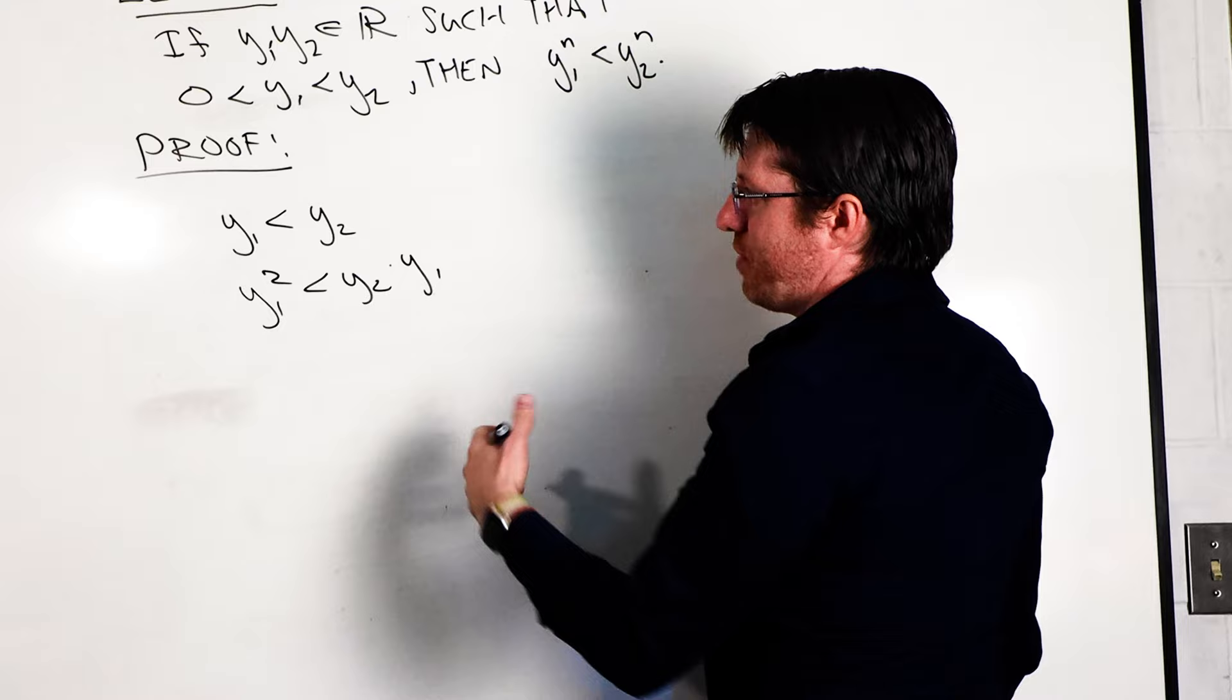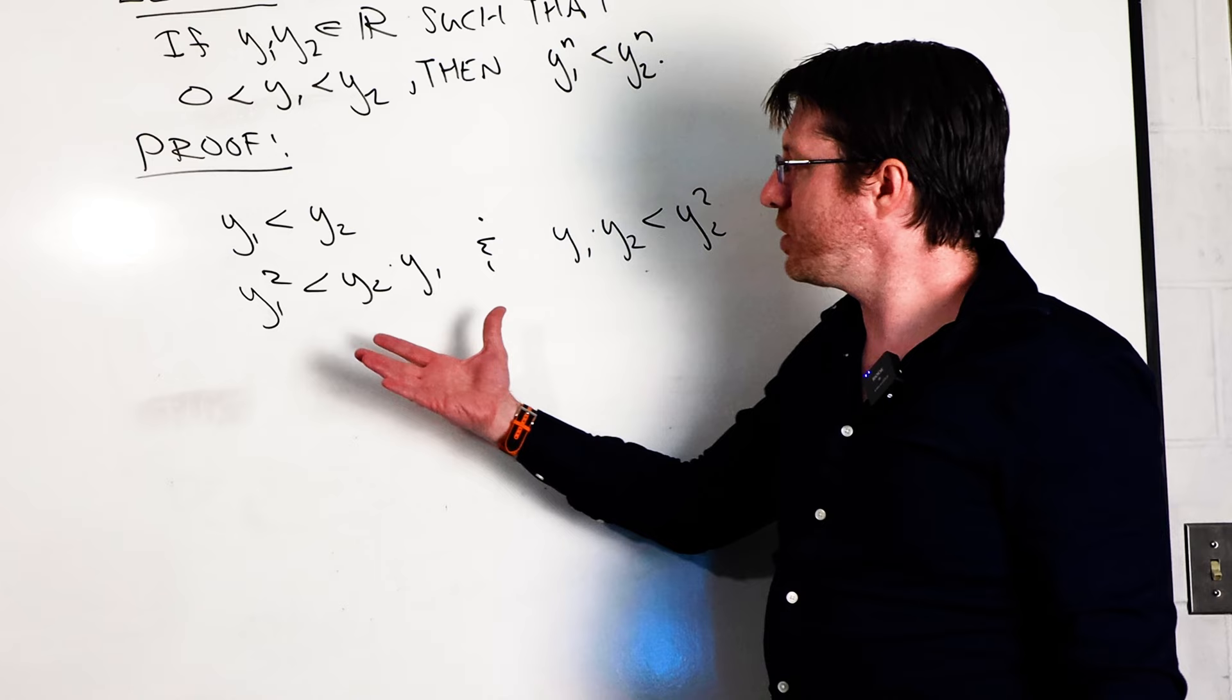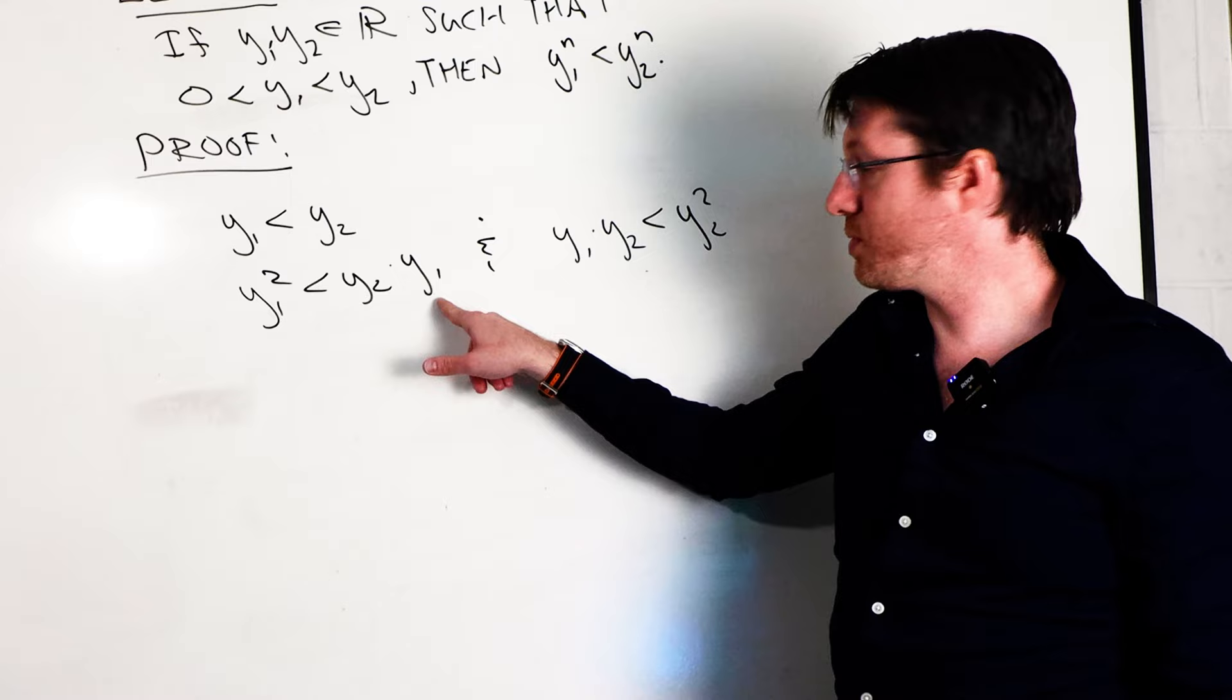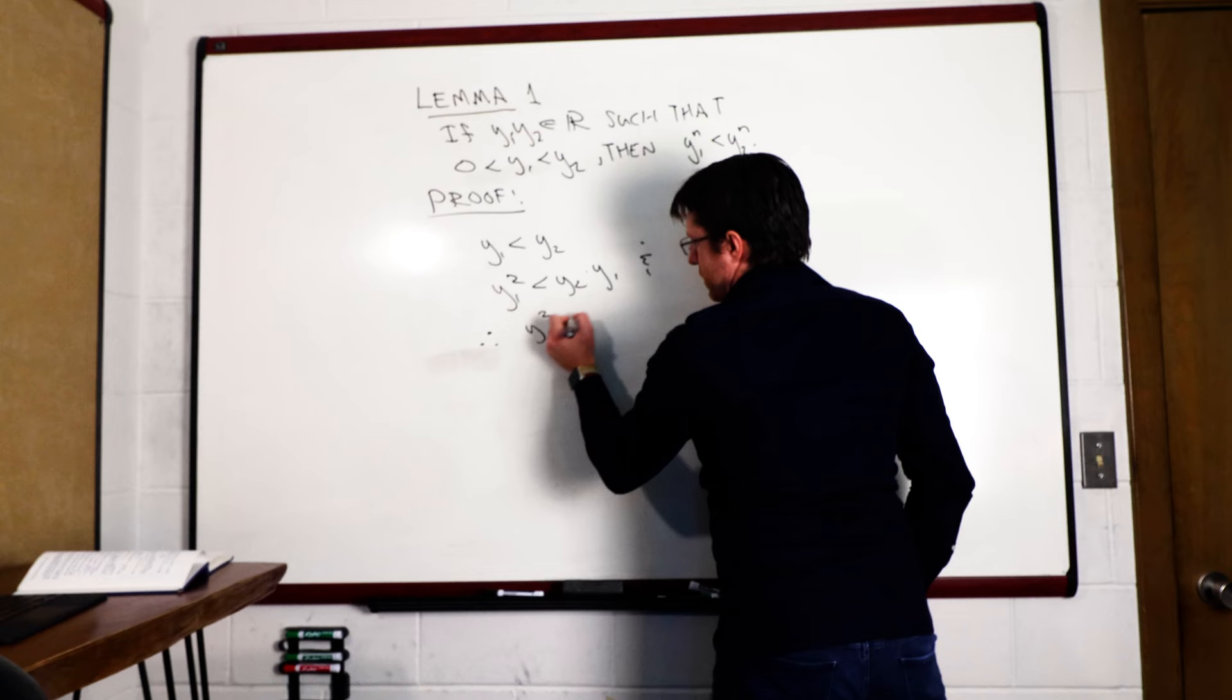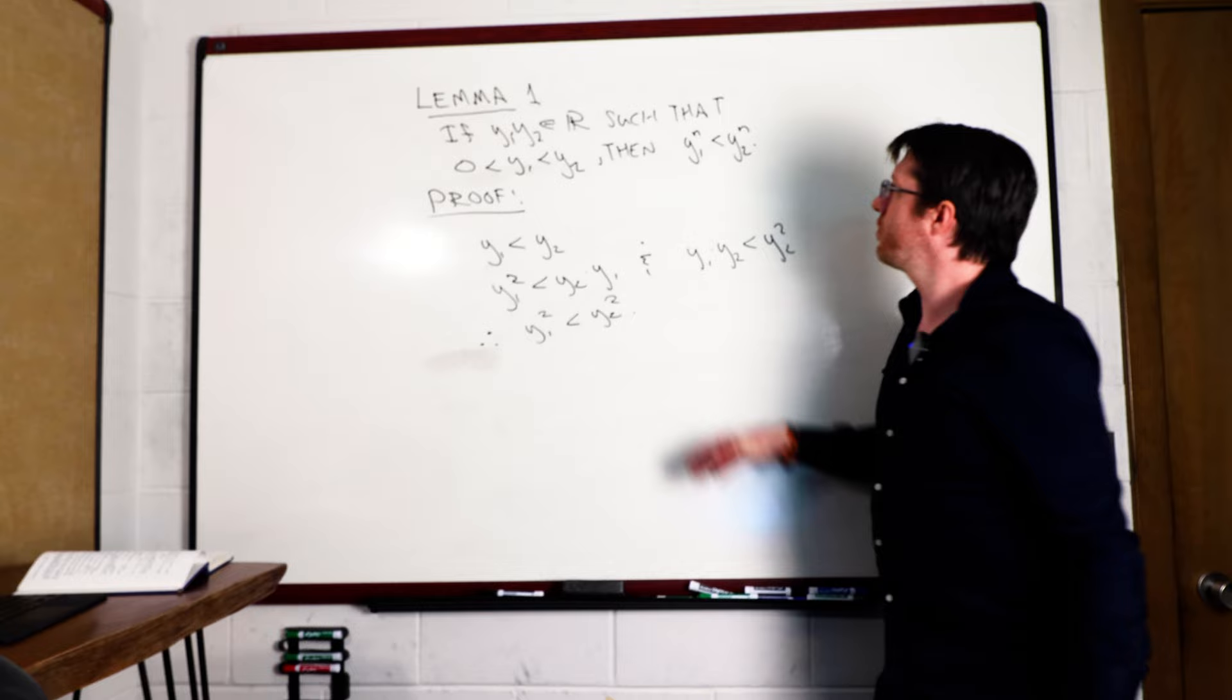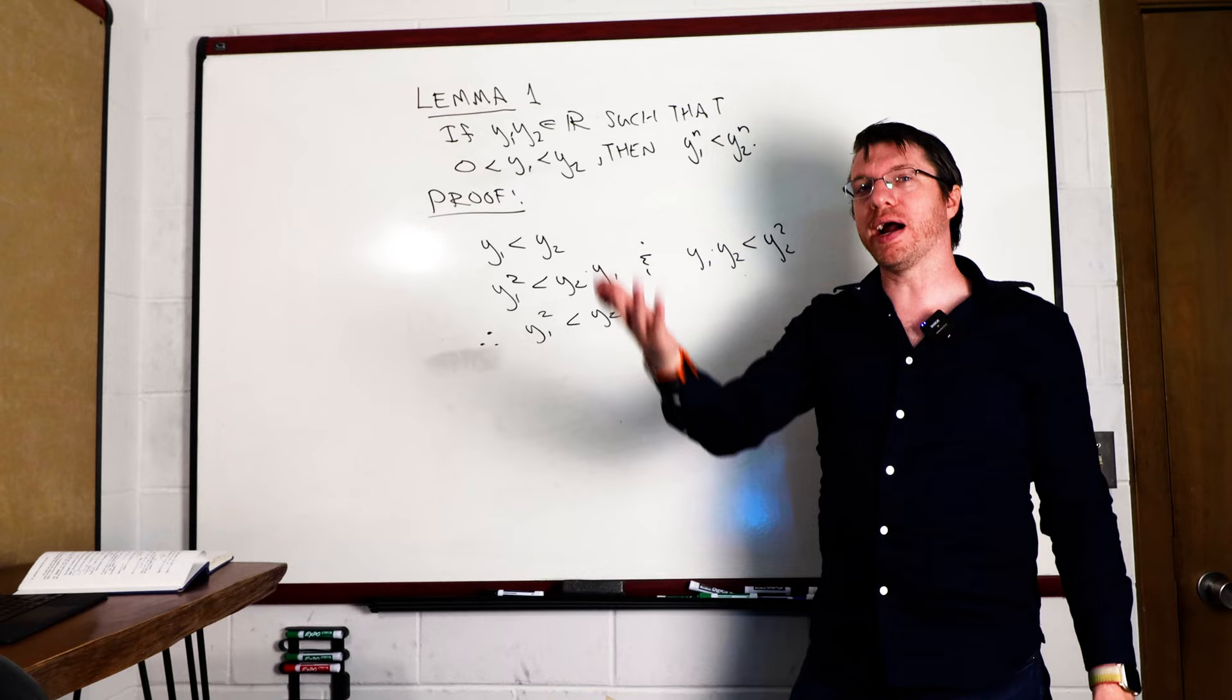Okay, so now we have this transitive property about inequalities. So that means that since y1 squared is less than y2 times y1, and that same term here is less than y2 squared, then that means that y1 squared is less than y2 squared. So we prove this for not just an arbitrary end, but for a squared in particular. So let's see how we can go up to a higher power and then the rest comes down to induction and I'll leave that too.